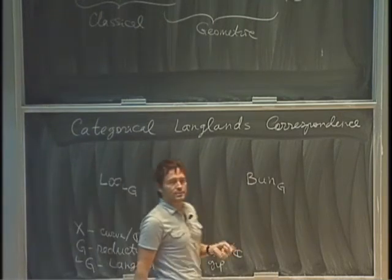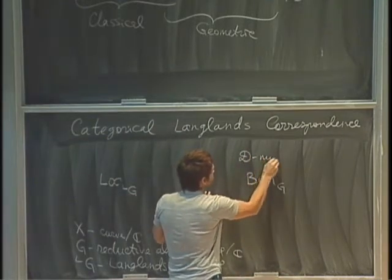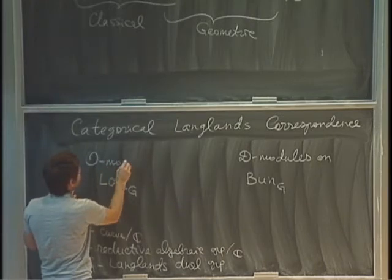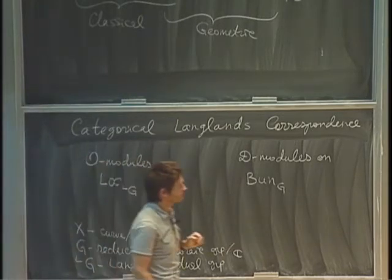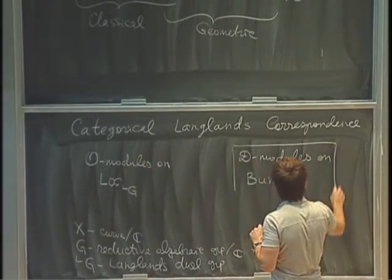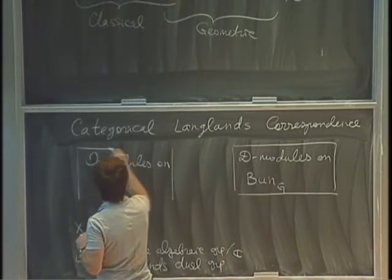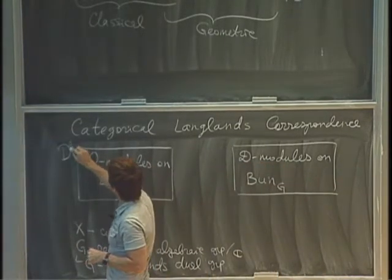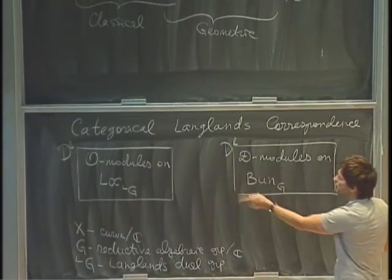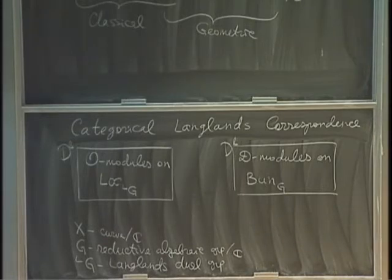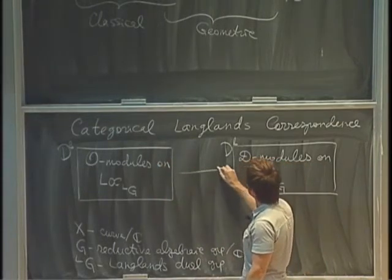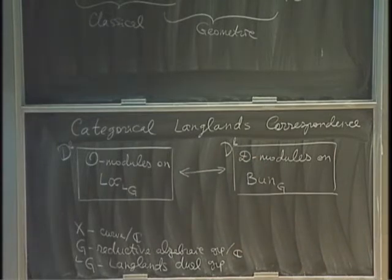We have two categories associated to these moduli stacks. On one side, it's the category of D-modules on the moduli stack of G-bundles. On the other side, it's the category of O-modules on loc LG. To have a chance of equivalence, we look at derived categories — perhaps bounded derived categories — and also make some modification. I will not get into these details; D-Marinkin will tell us more in his next talk. After the modification, the conjecture is that these two categories become equivalent. That is the statement of categorical Langlands correspondence.